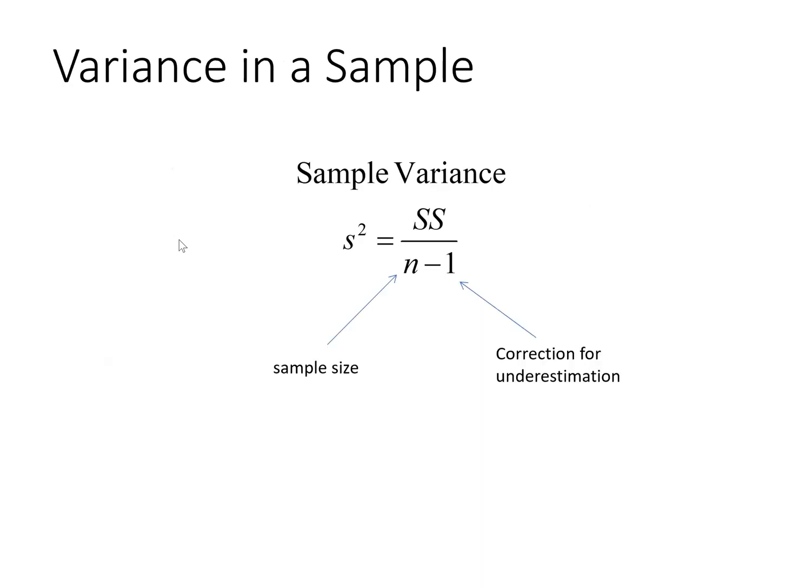So just taking a step back, to calculate variance in a sample, the formula is slightly different, and the symbol is different. So lowercase letter s squared stands for variance in a sample, and it still has in the numerator the sum of squares, but in the denominator there is a correction of n minus 1. That correction is applied because if we use the sample size in a sample in the denominator, it tends to underestimate the variance in the population. So this correction is often applied.